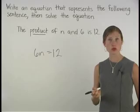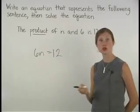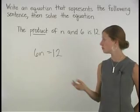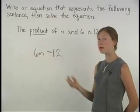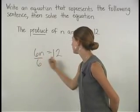So we have 6n equals 12. We want to solve our equation for n, so we want to get n by itself on the left side of the equation. Since n is being multiplied by 6, we need to divide both sides of the equation by 6.